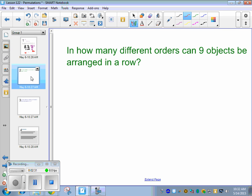All right, let's try another one. In how many different orders can nine objects be arranged in a row? Jacob.